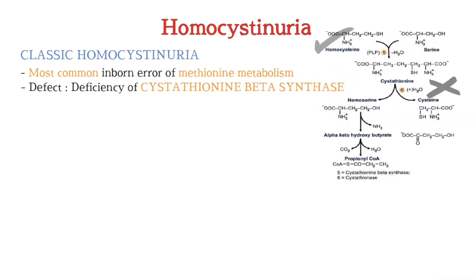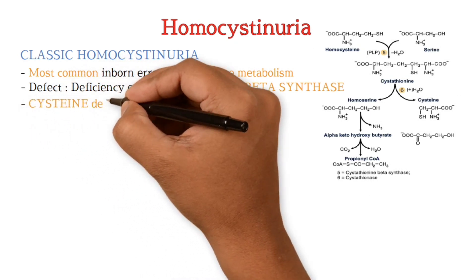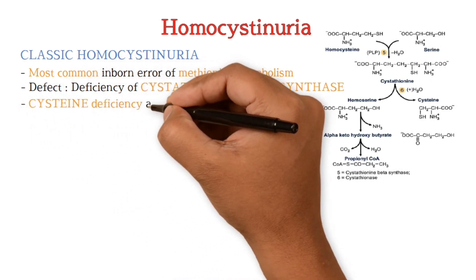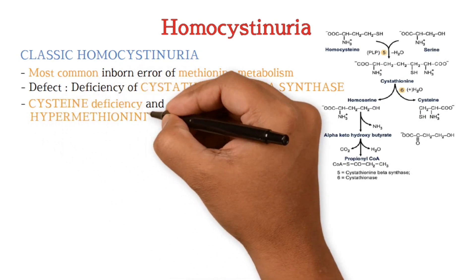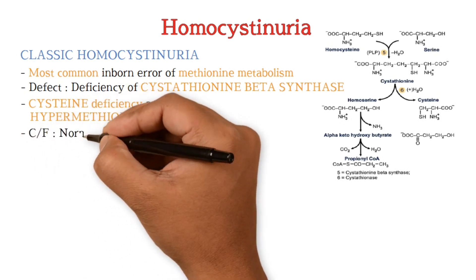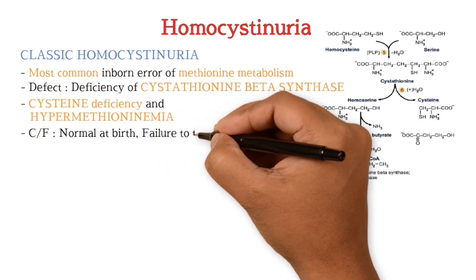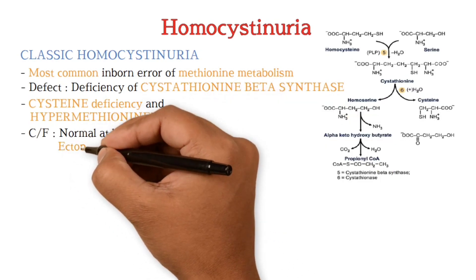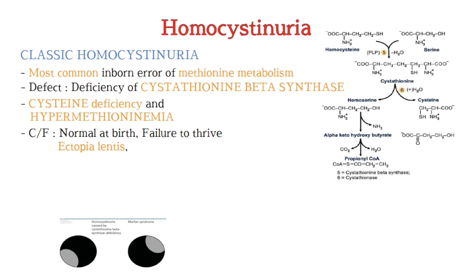Because homocysteine is not converted to cysteine, there is cysteine deficiency, and more homocysteine is available for methionine synthesis, resulting in hypermethioninemia. Clinically, the baby is normal at birth but shows failure to thrive and developmental delay. Diagnosis is usually made after three years of age when ectopia lentis occurs.